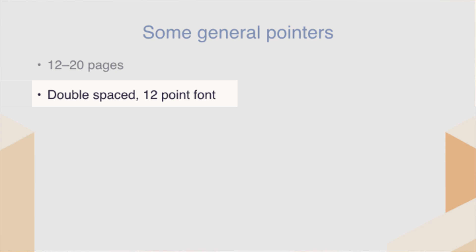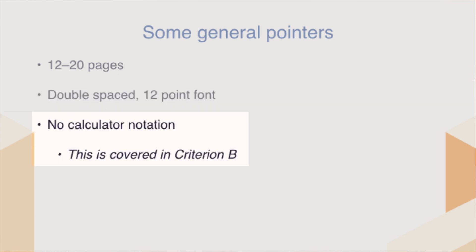You want to make sure you're double spaced with a 12 point font. You don't want to use calculator notation — this is covered in criterion B. That means no asterisks, no up arrows or carets. You want to use proper mathematical formulas like you would see in a textbook.